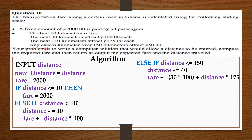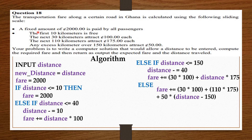Lastly, any excess kilometer over 150 kilometers attracts 50 cedis, meaning if the distance is above 150 kilometers, we say else: the passenger is going to pay the fixed amount, plus the full amount for covering the next 30 kilometers, plus the full amount for covering the next 110 kilometers, plus 50 times the distance traveled after 150 kilometers, which is distance minus 150.